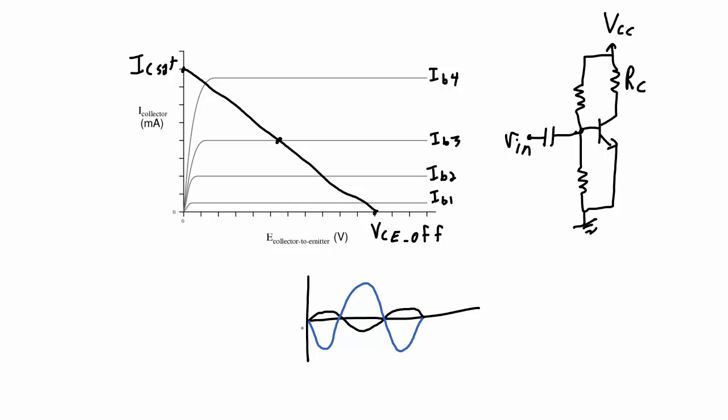The main takeaway from this is for a class A amplifier, it is biased so that the output voltage can swing a full 360 degrees when the input voltage also swings a full 360 degrees.